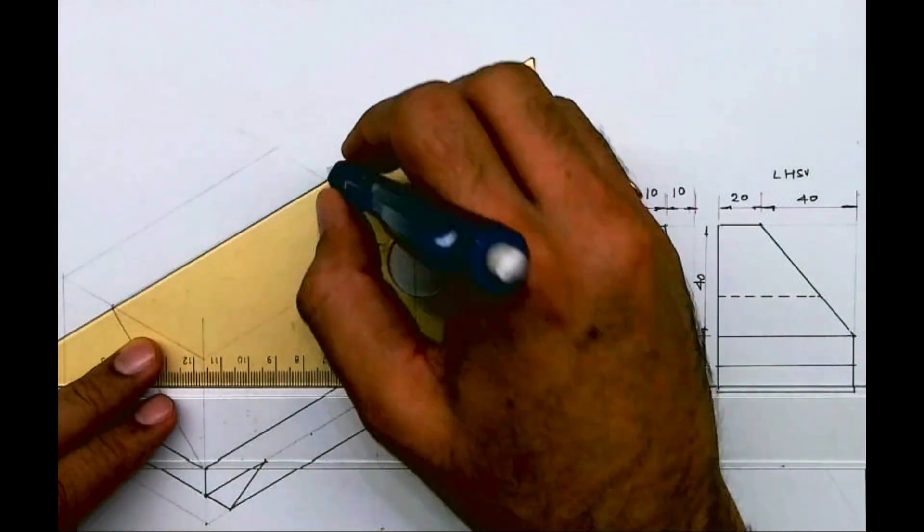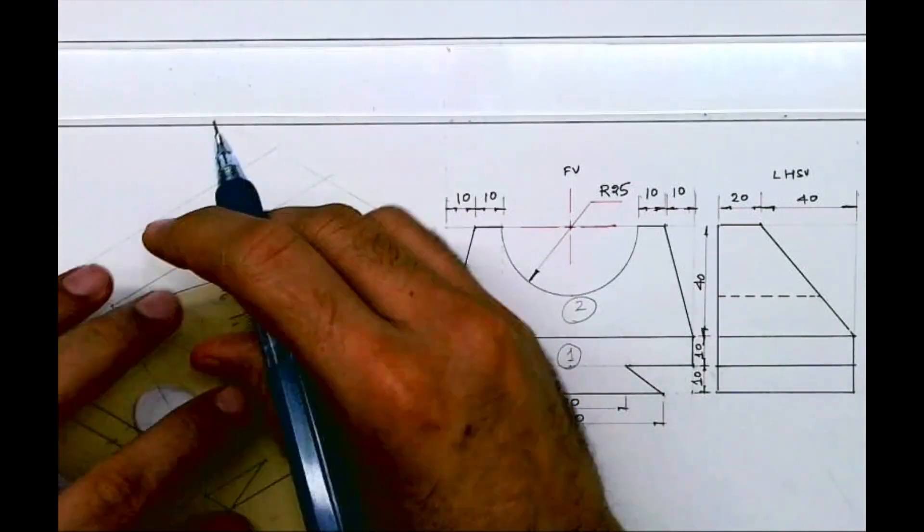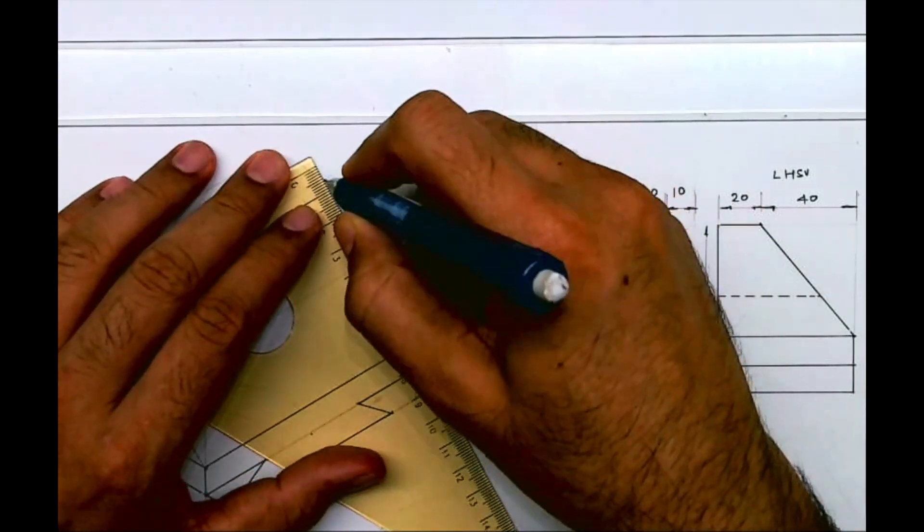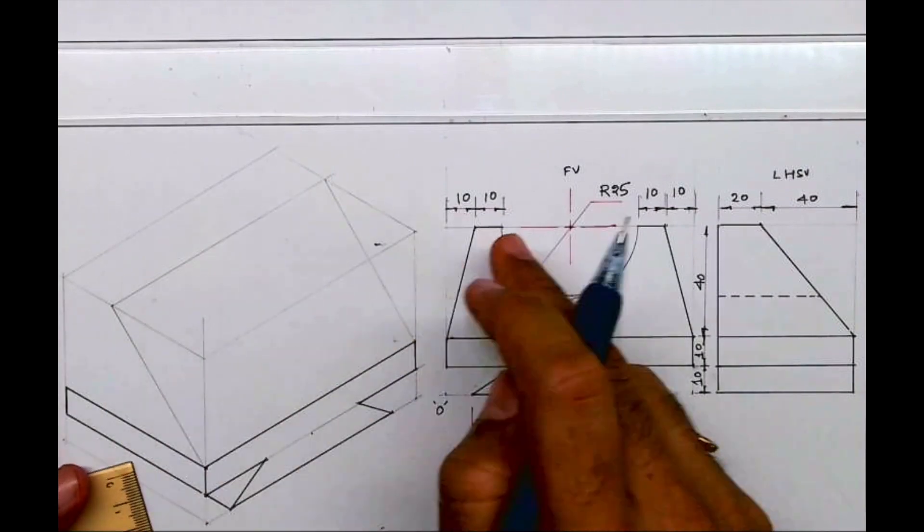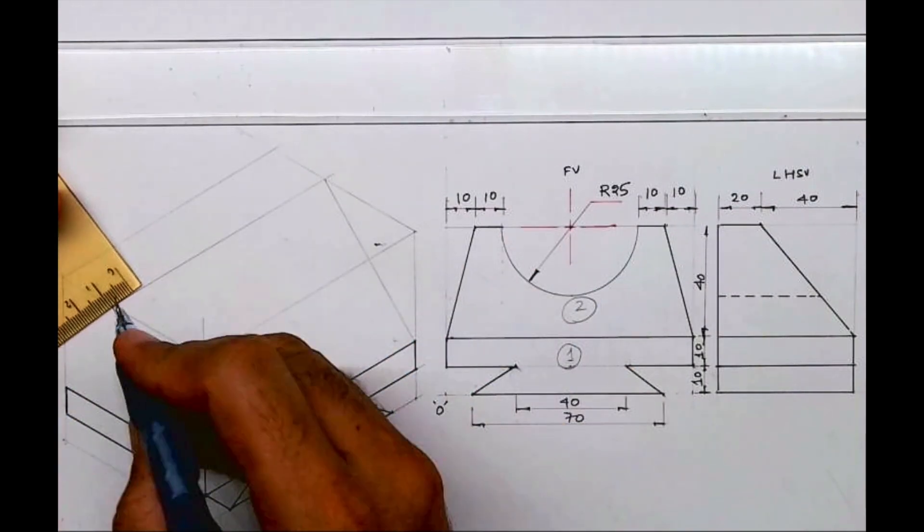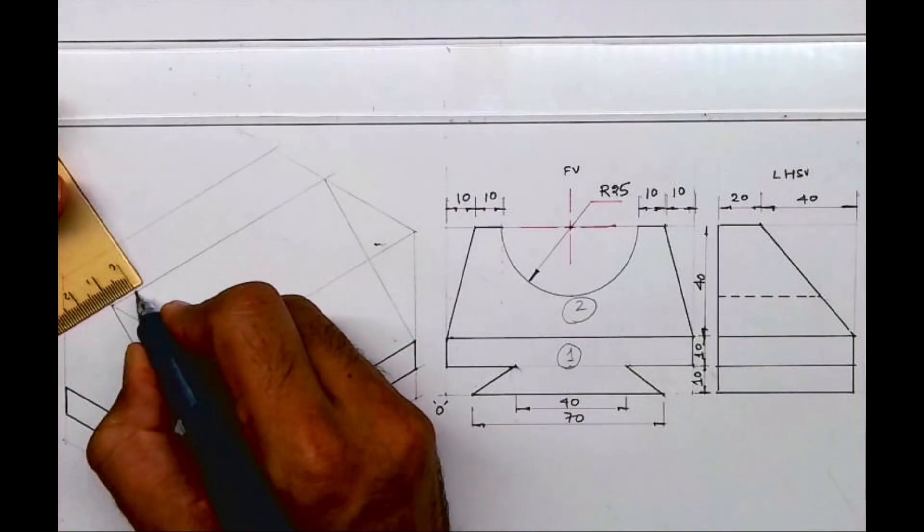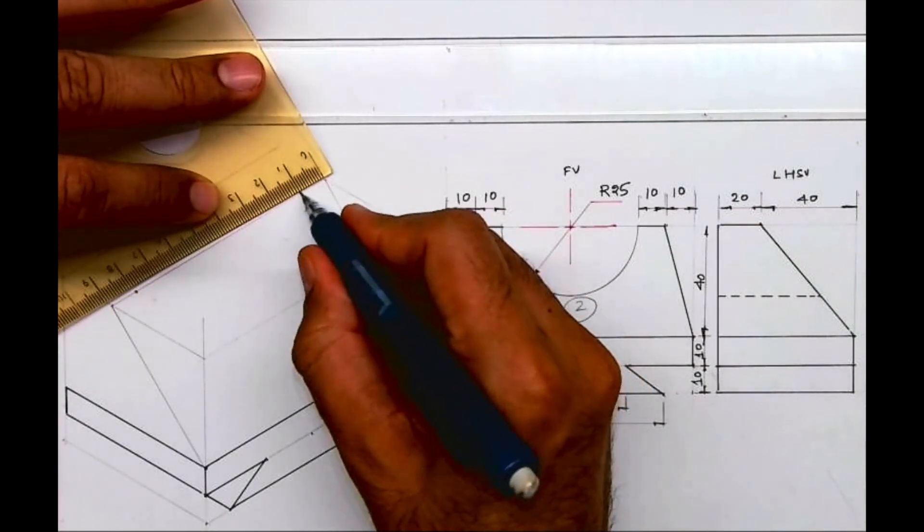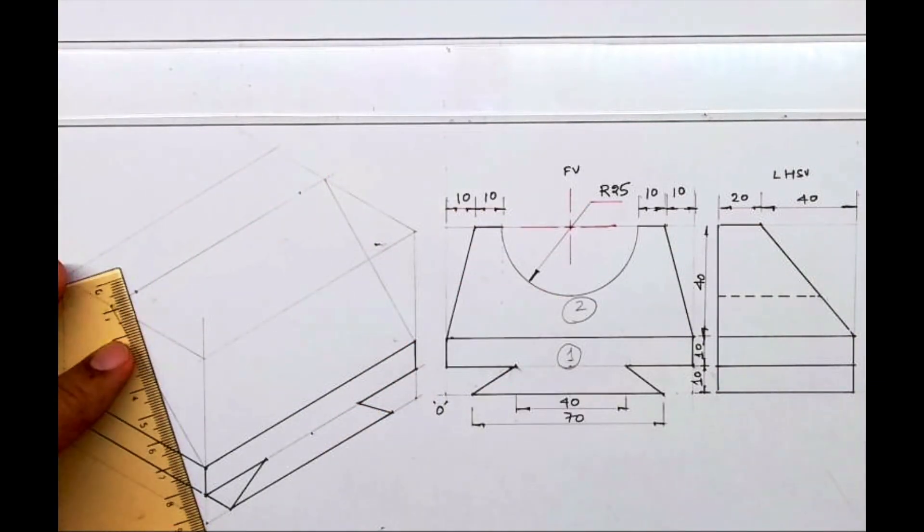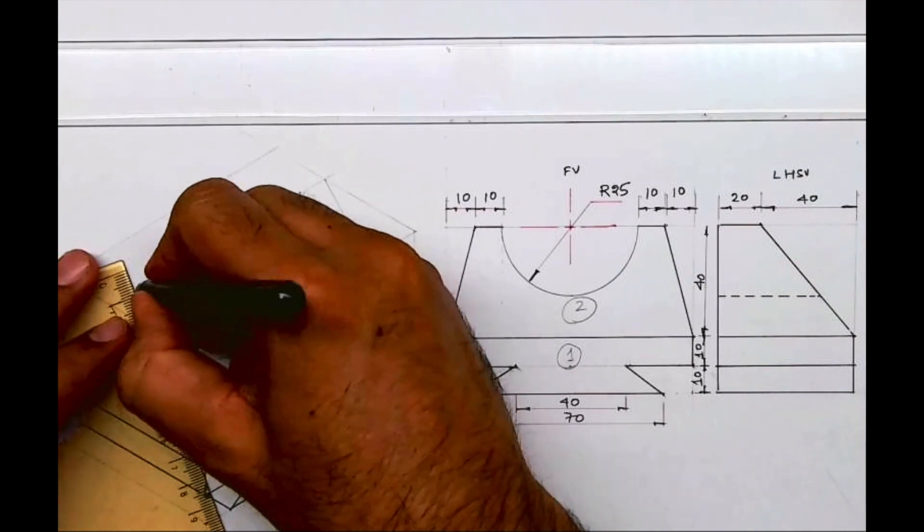Now whatever is there in the front, the same thing is behind. So I will draw that slope behind also like this. But if you see the front view, it is 10mm inside. So you go 10mm inside from both sides and then you join this.